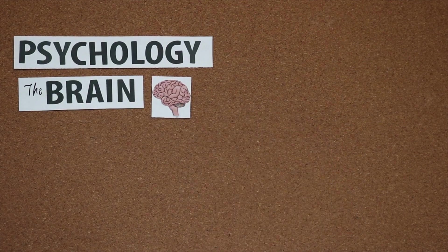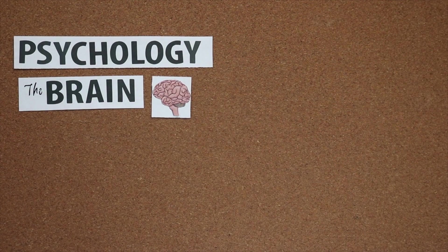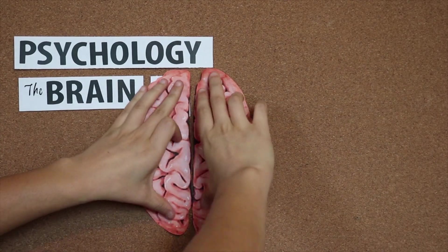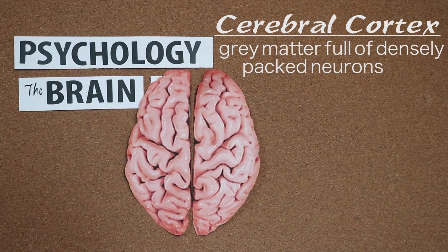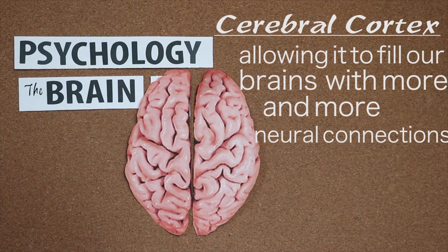The forebrain is essentially the most human part of our brain, and it's the part that we're most familiar with. Part of it is the cerebral cortex, all that pink and wrinkly stuff that we know and love. This is the gray matter full of densely packed neurons that cover the entire brain. As we grow and develop, our cerebral cortex grows as well, allowing it to wrinkle even more and fill our brain with more and more neural connections.